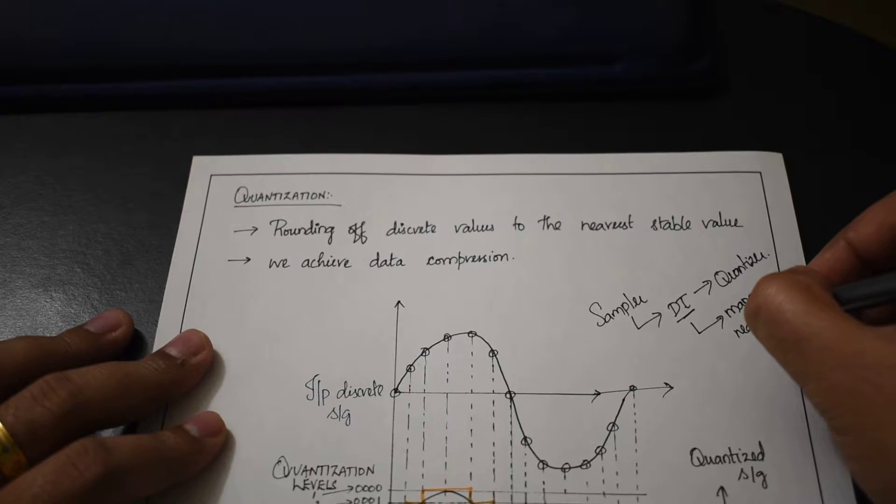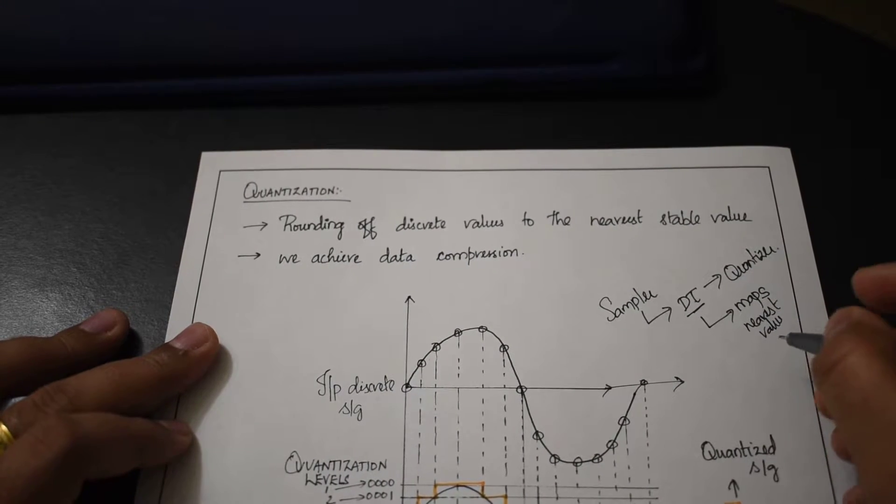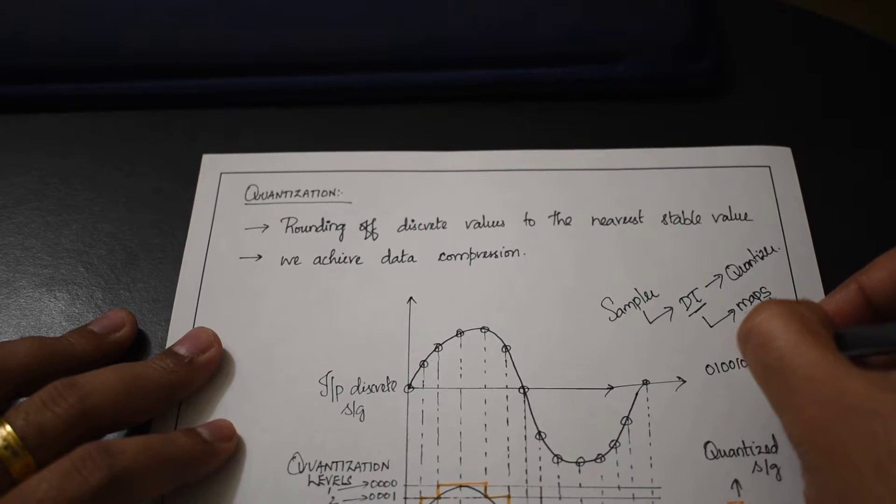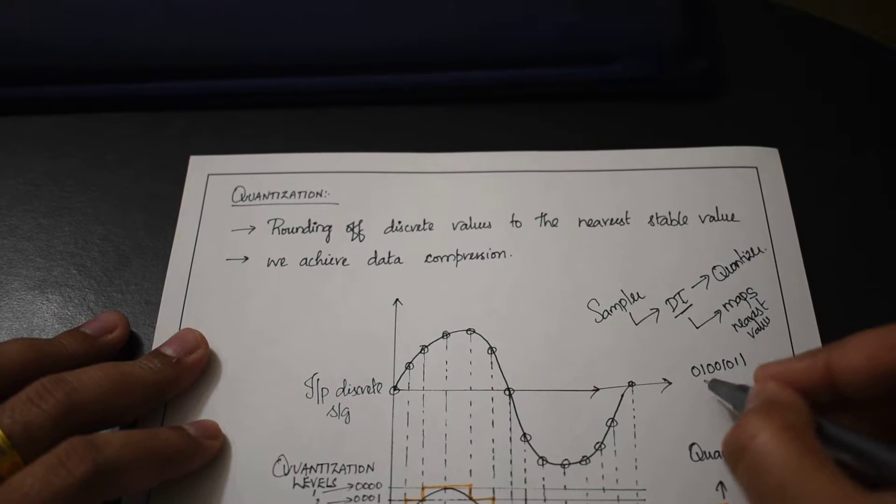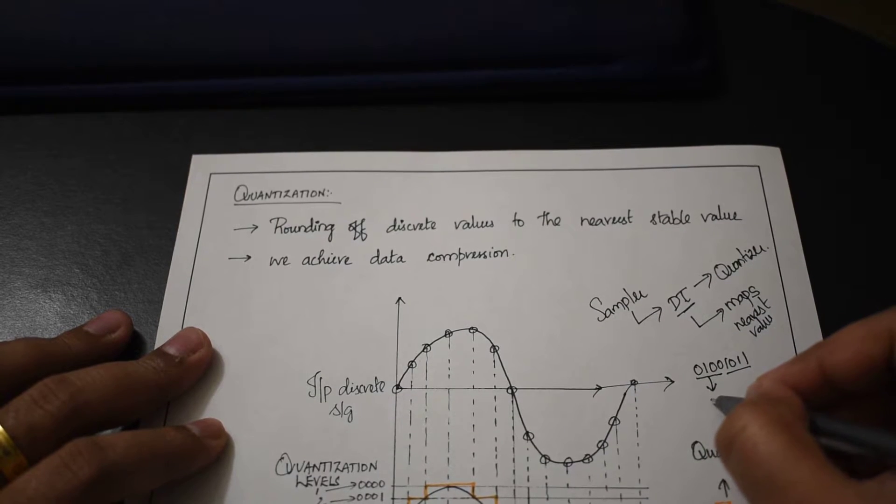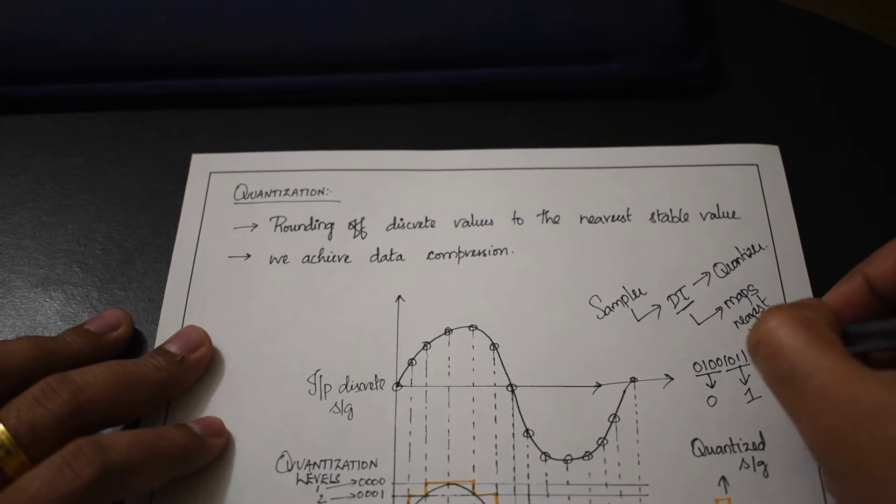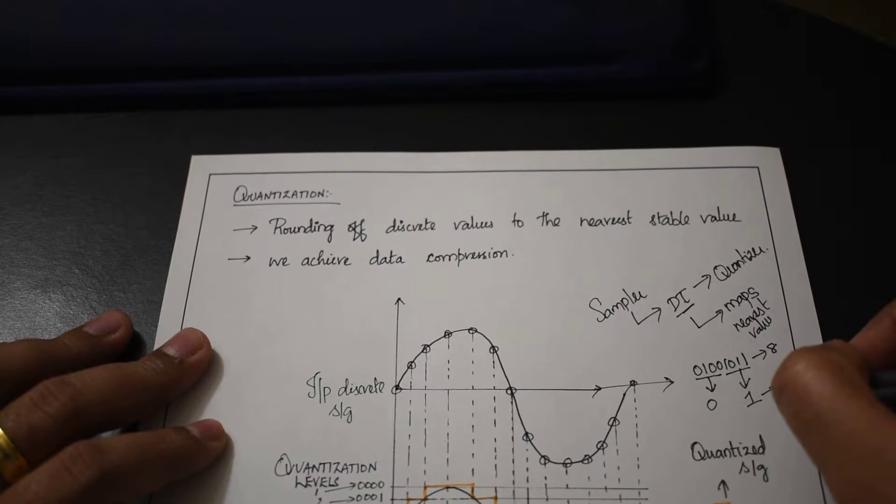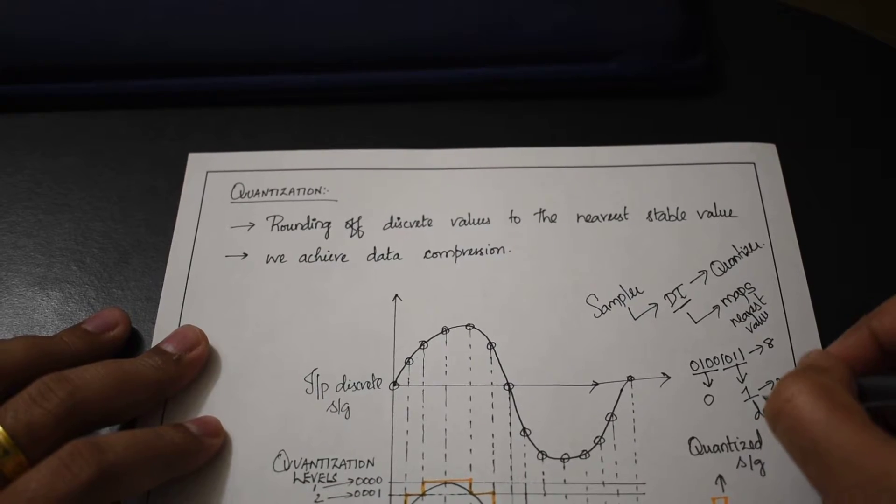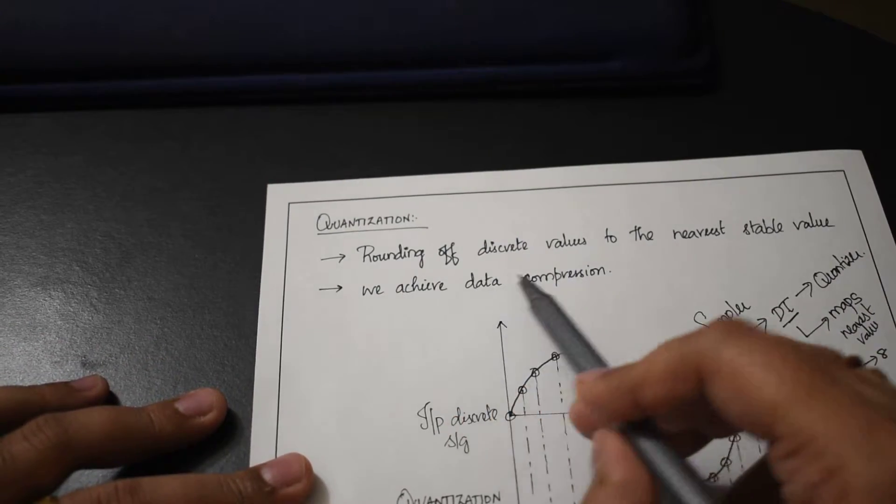What do we achieve from this? Let's say we have discrete values like 0, 1, 0, 0, 1, 0, 1, 1. The quantizer maps the first four digits to 0 and the next four digits to 1, so we're sending eight bits of information in just two bits. What we're achieving here is data compression. That's what we achieve in quantization - data compression.